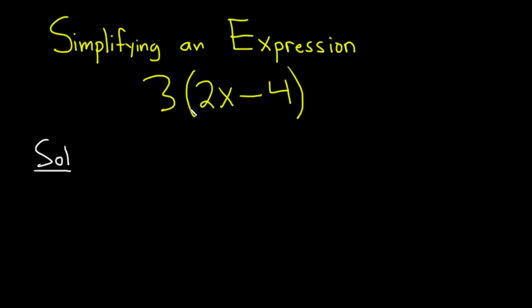In order to simplify an expression like this, you have to use something called the distributive property. This says that you would take this number 3 here and multiply the 3 by each of these numbers here.